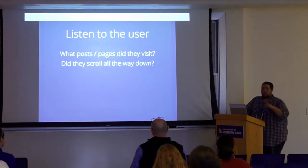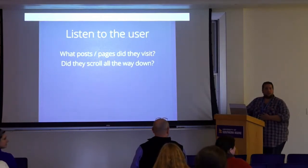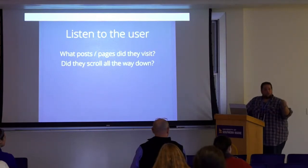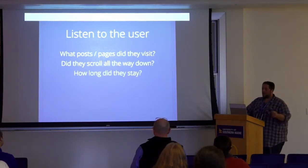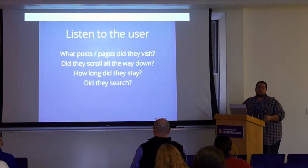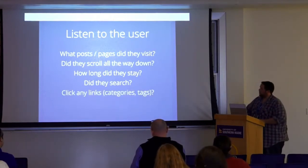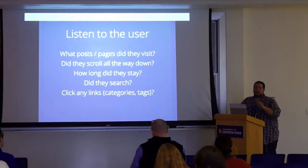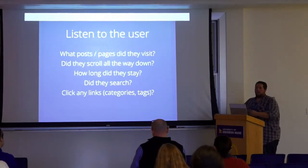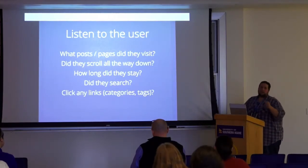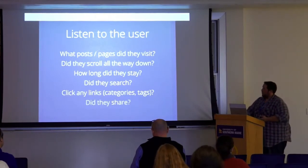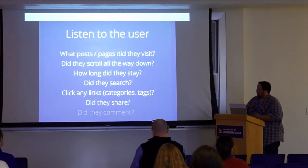Questions you can start asking yourself within WordPress right now: Did they scroll all the way to the bottom of the page? How much time did they spend — did they read the whole article? You can put tracking pixels or cookies at the bottom of a page to see whether images loaded. How long did they stay? Did they perform any searches? Google Analytics or Jetpack stats will tell you if people are searching. Did they click on categories or tags? Categories and tags are so underutilized — they tell you exactly what the user is clicking on and give you a broader range of what to write. They're telling you what they want you to write more about. Did they share and did they comment?